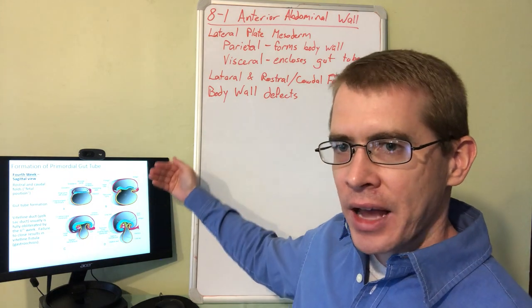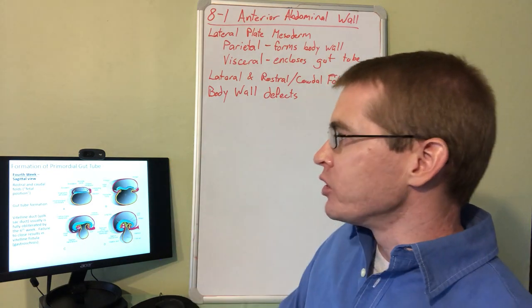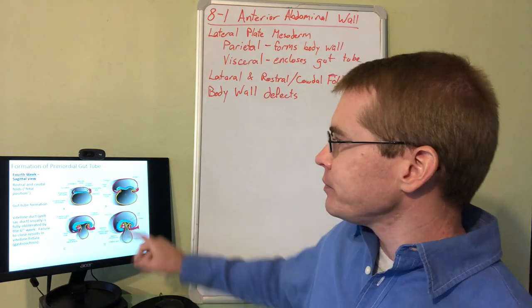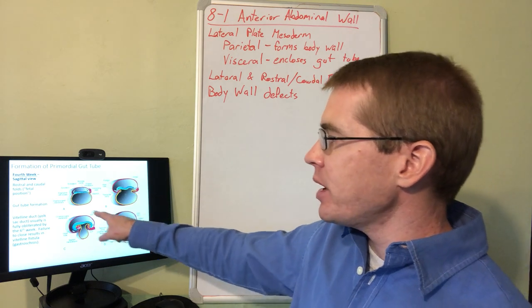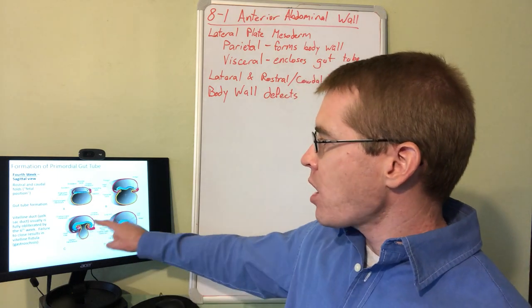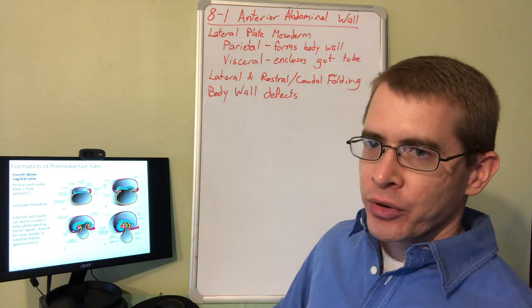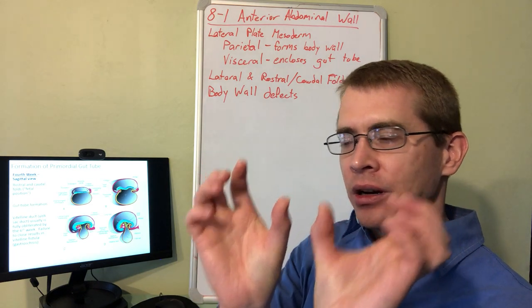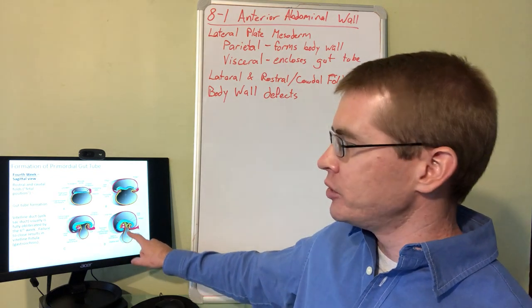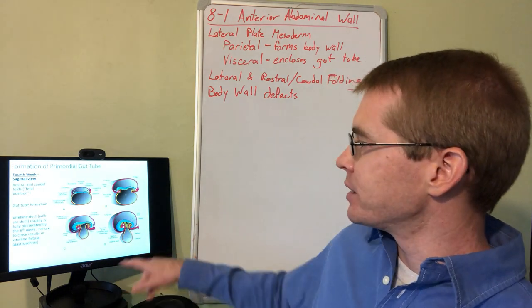Now let's take a look at a sagittal cross-section. We can see the rostral and caudal folding that also occurs. Here's the yolk sac, quite large in this early stage. As the folding takes place, that parietal mesoderm causes the rostral and caudal curvature of the embryo to form that bent fetal position. You can also see in this view the yolk sac protruding out of the ventral portion of the embryo as it's developing.